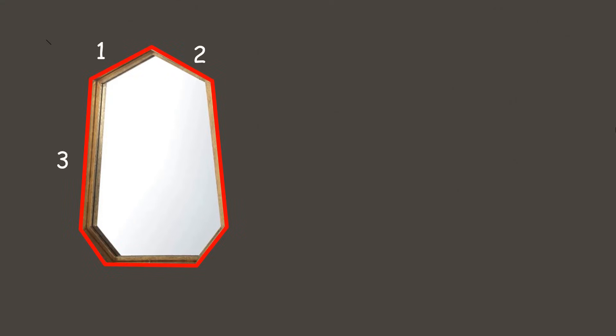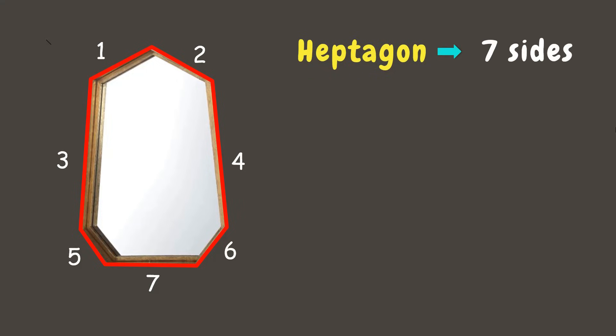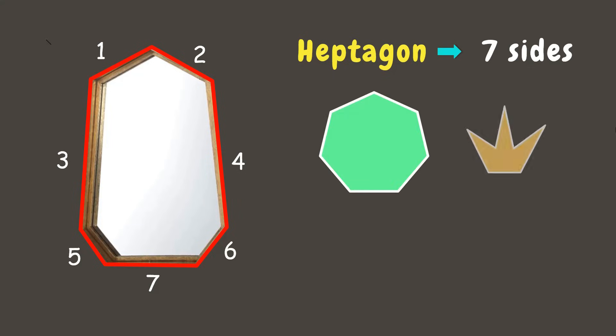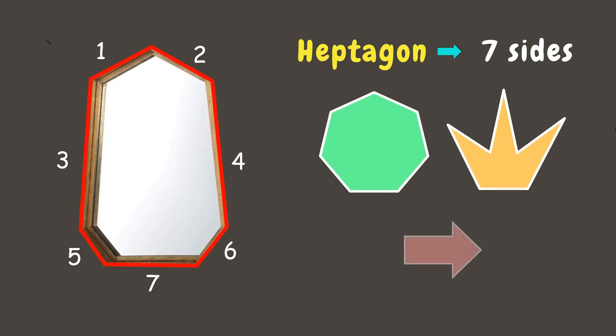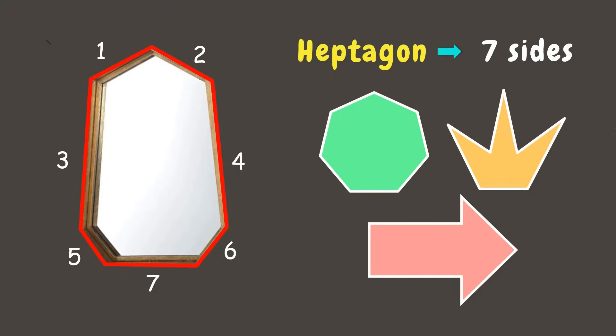Moving on, we have a mirror. This one has seven sides and a polygon with seven sides is called a heptagon. A heptagon has seven sides and seven angles. Here are examples of heptagon.